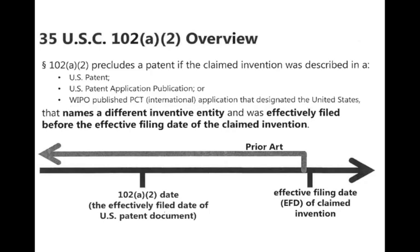What does USC 102 A2 say? It's the second thing that will knock you out. The claimed invention was described in a patent issued, or in an application for patent published or deemed published, naming someone else. This is if somebody else does the work.